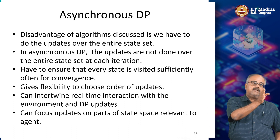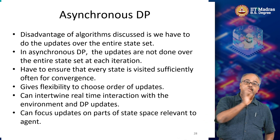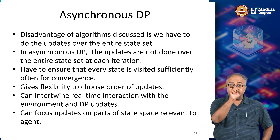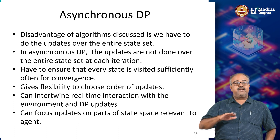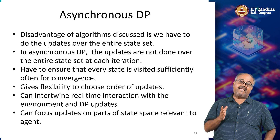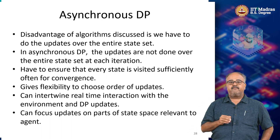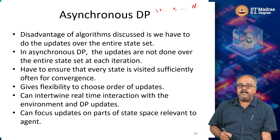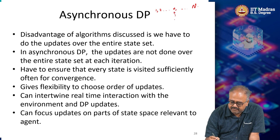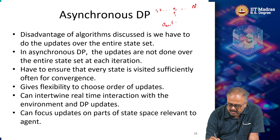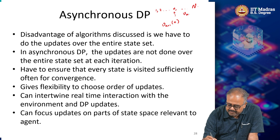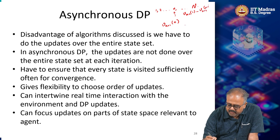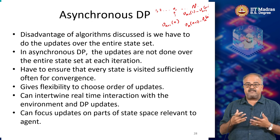When I am updating the n-th state, then for all the states up till n minus 1 I would be using the k+1 version of the value function, and for states from n+1 onwards I will be using the k-th iteration of the value function. Suppose I have states 1, 2, ... n, ... up to capital N. When I am computing v_{k+1} of state n, I will be using v_{k+1} of states 1 through n-1, and v_k for states n+1 through N. This is the in-place update we are doing.